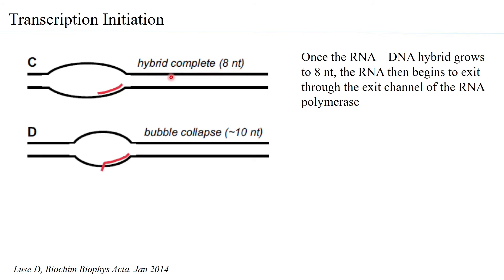When the hybrid becomes greater than eight nucleotides, the RNA enters the exit channel of RNA polymerase 2. This is an important development because conformational change is necessary for the RNA to come out of the RNA exit channel.